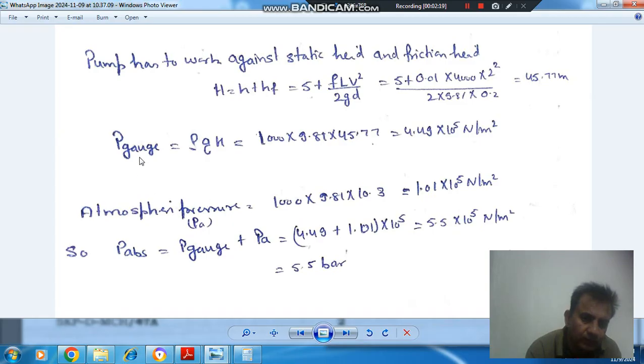So that is 4.49 × 10⁵ N/m². So that is your gauge pressure. And atmospheric pressure is 10.3 meters, so atmospheric pressure is 1.01 × 10⁵ N/m².